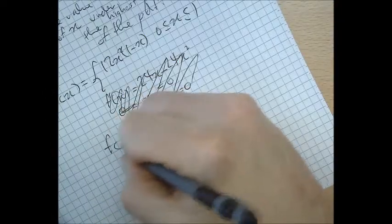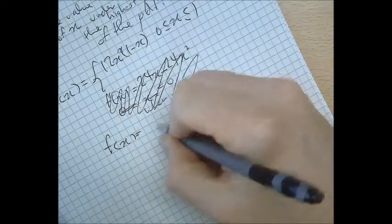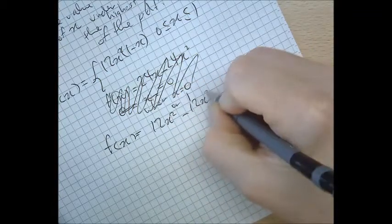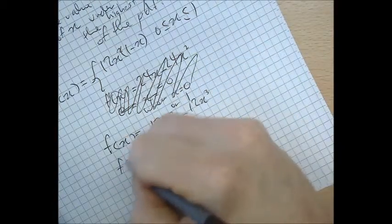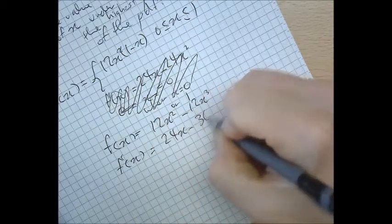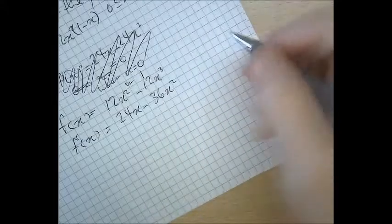Let me get this properly ready for calculus. 12x squared minus 12x cubed. So the derivative is 24x minus 36x squared. When is that equal to 0?